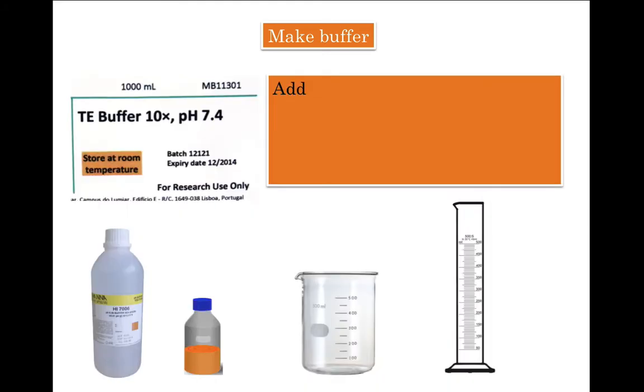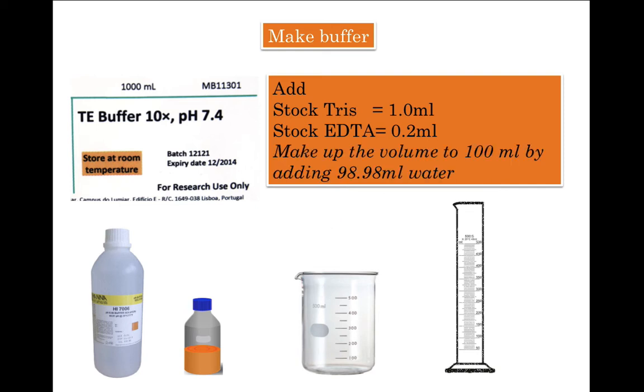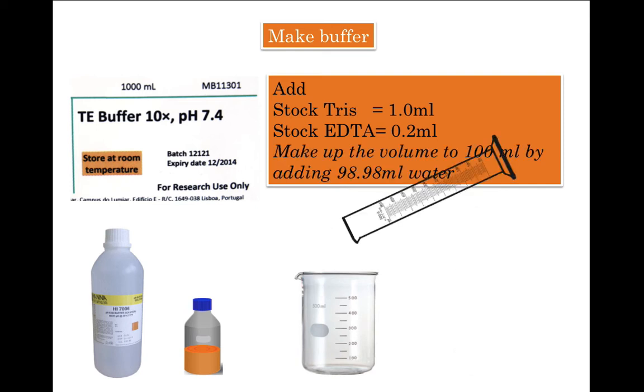all you do is add stock Tris 1 ml. So basically from 1 molar stock Tris, you take 1 ml from that bottle and add it into a beaker. And then from stock EDTA which was 0.5 molar, take 200 microliters or 0.2 ml and again add it to the beaker. And then make up the volume to 100 ml by adding 98.8 ml water. And that's how you simply dilute and make TE solution.